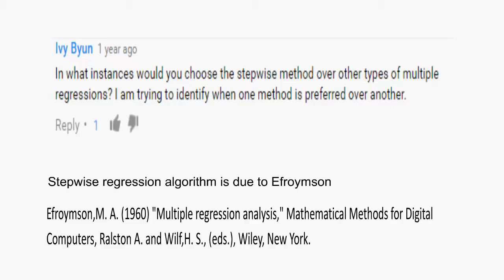First question: in what instances would you choose the stepwise method over other methods? Avoid stepwise regression unless you are building a model for prediction where you have a ton of X's to choose from. Here, I might use stepwise to reduce the number of regressors and then use the stepwise model as a starting point to build a model for prediction. Stepwise regression goes back to the work of Ephraimson in 1960 and was useful in its day to address variable selection for regressors with a large number of X's. The stepwise algorithm was good in that it reduced computing time to search among the linear combination of X's for the model for Y. Computing speed was an issue then, but it's less relevant now.